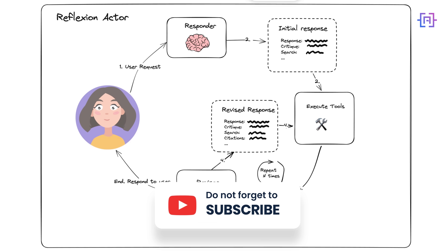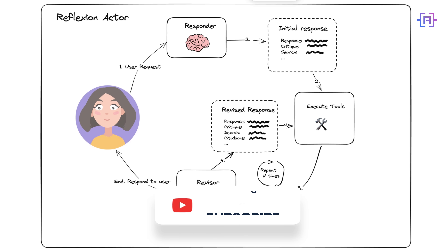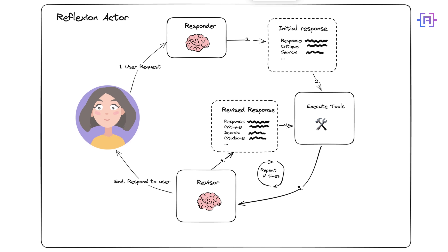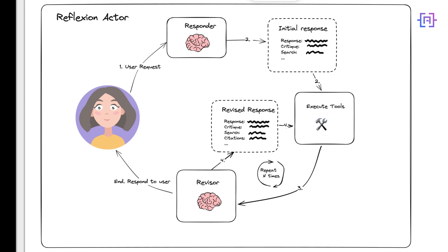And finally, we have the store step. The actor's reflections and the external evaluator's feedback are stored in the episodic memory, allowing the agent to learn from its experiences and improve future performance.